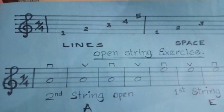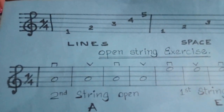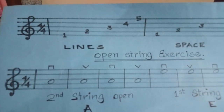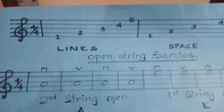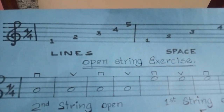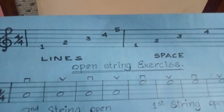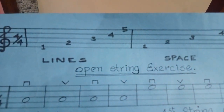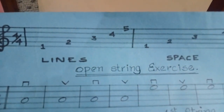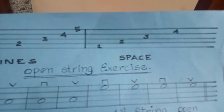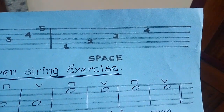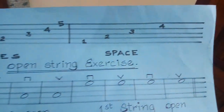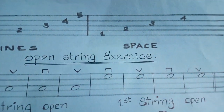We want to do a takeaway from what's important. The notes will appear clear. The next step is to show the notes. The staff will show the notes. The staff has 5 lines and 4 spaces. The staff will show the open string exercise.